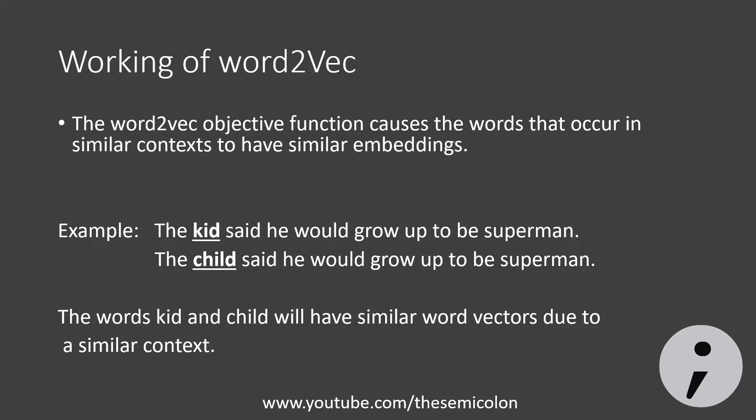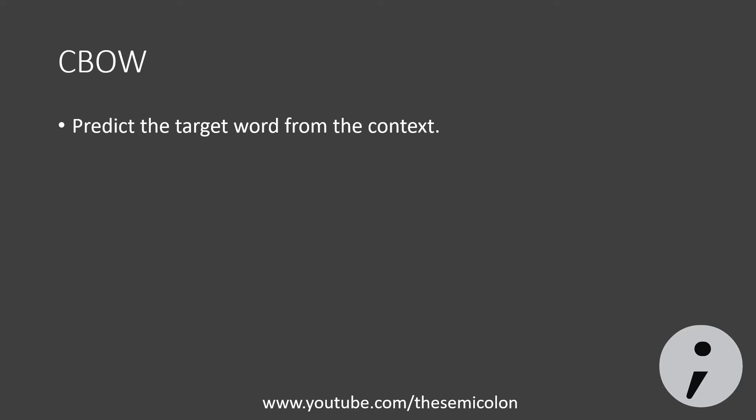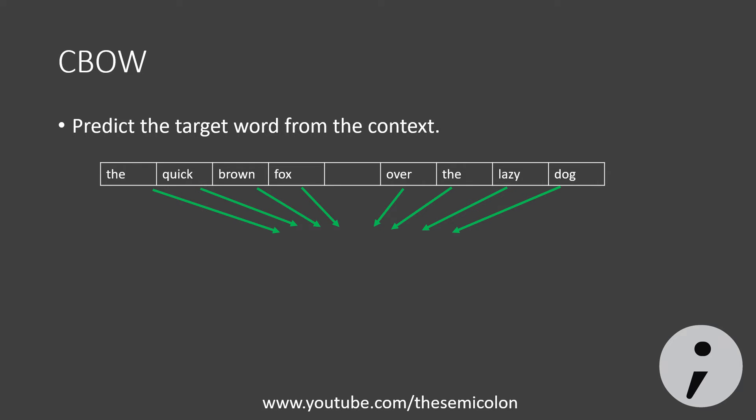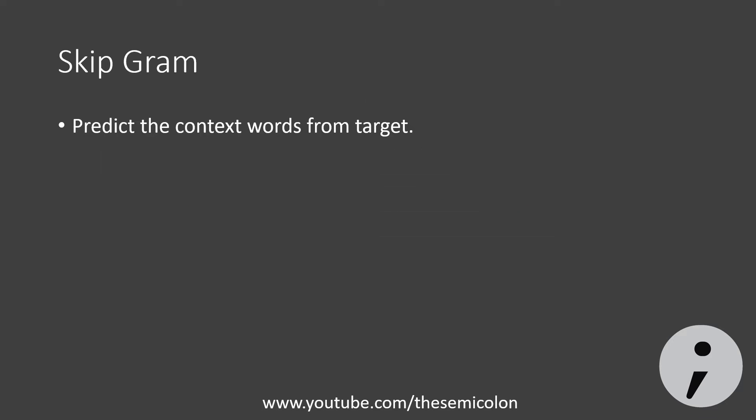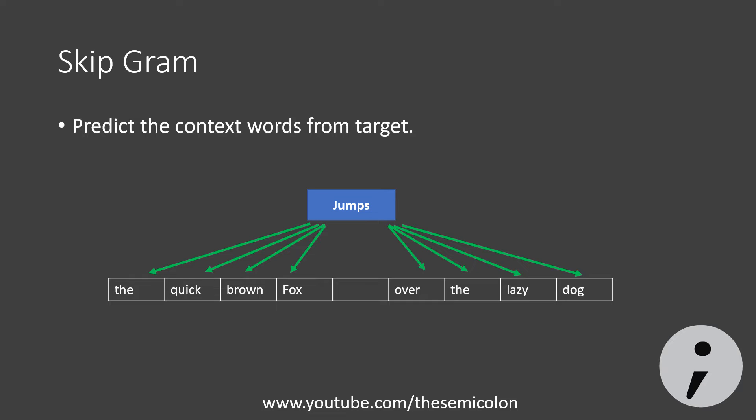How does word2vec generate vectors from words? There are two algorithms: Continuous Bag of Words (CBOW) and Skip-gram. In CBOW, we predict the target word from the context words. In Skip-gram, we try to predict the context words from the target word. You may ask why we are trying to predict words when we need vectors for each word — I'll answer that later in the video. For now, let's look at the detailed working of each method.